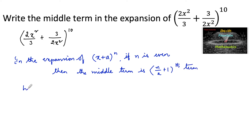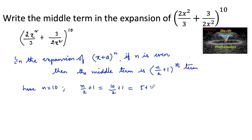Here n is equal to 10, therefore n/2 + 1 equals 10/2 + 1, that is 5 + 1 = 6. So we can say the sixth term is the middle term.